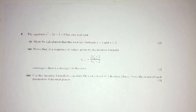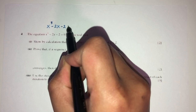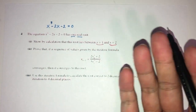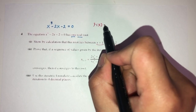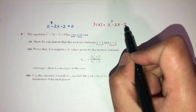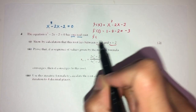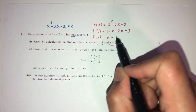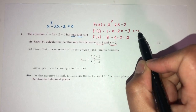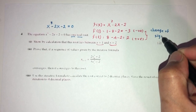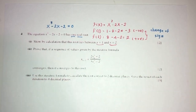Now let's move on to question number 4. The equation is x³ − 2x − 2 = 0, which has one real root. We have to show that this root lies between 1 and 2. Let f(x) = x³ − 2x − 2. f(1) = 1 − 2 − 2 = −3, and f(2) = 8 − 4 − 2 = 2. Since the sign changes from negative to positive, there is a change of sign, and we can confirm the root lies between 1 and 2.